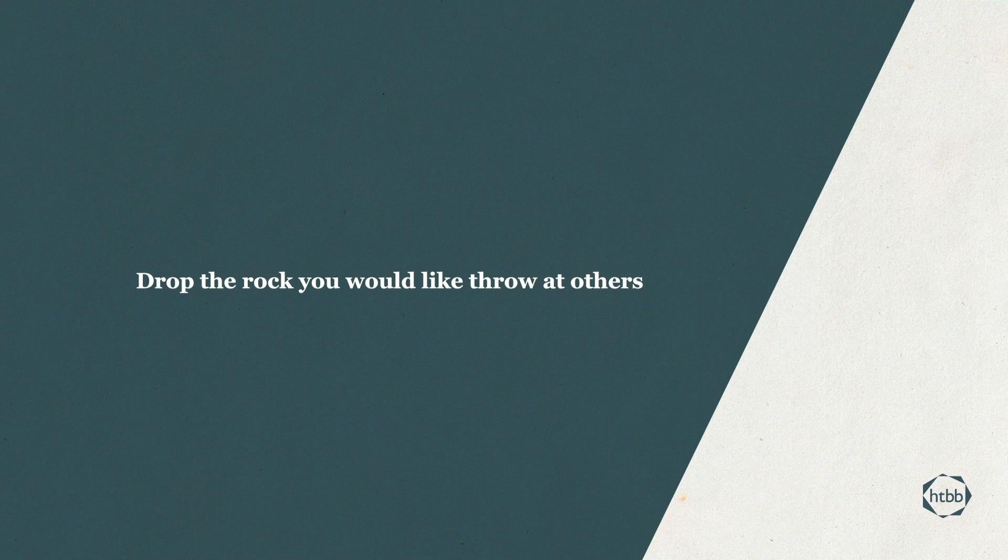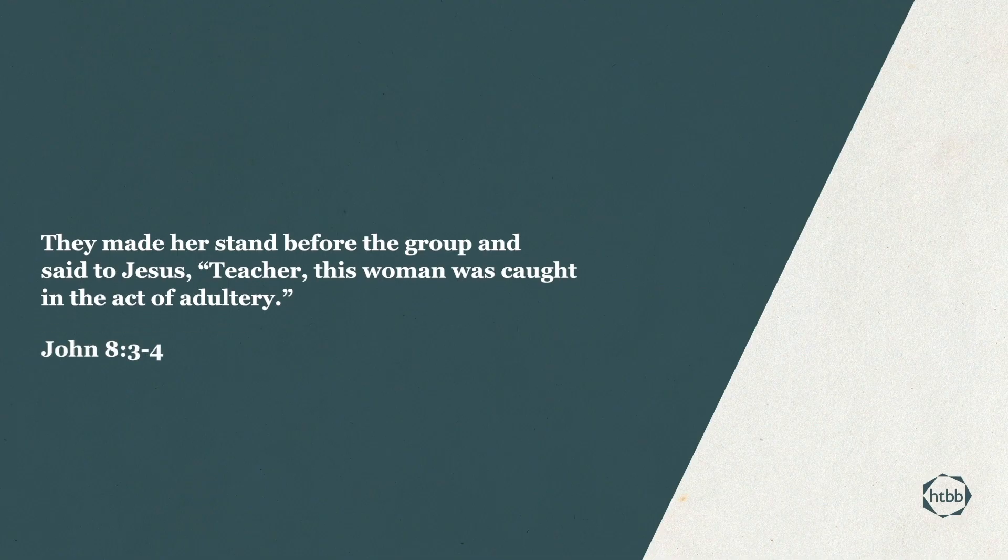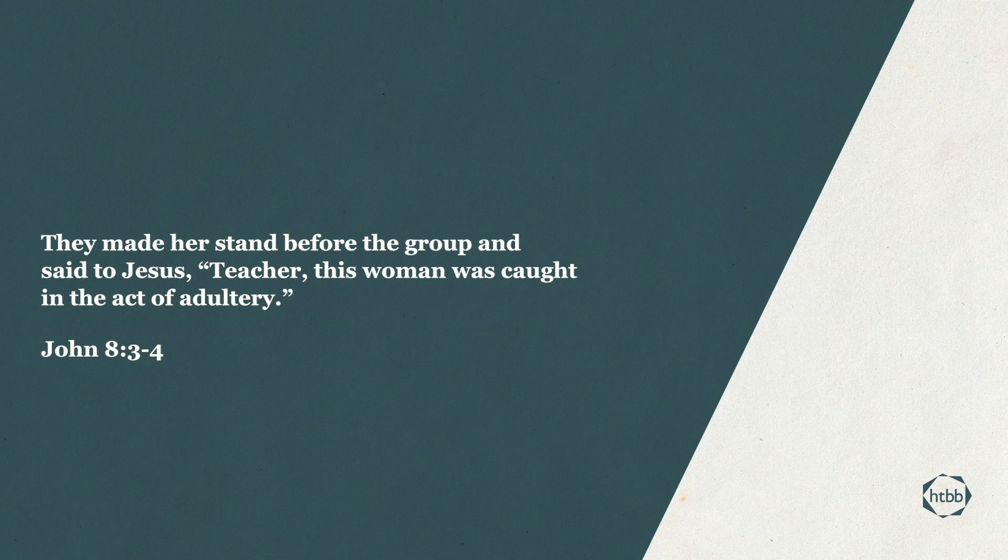Firstly, drop the rock you would like to throw at others. Condemnation is a boomerang. It always ends up going in the opposite direction. When you throw it at others, it always comes right back at you. We read, they made her stand before the group and said to Jesus, teacher, this woman was caught in the act of adultery. And I think, let's be honest, that's a bit weird. They kind of come boasting about the fact that they caught her in the act. I kind of think they probably have more issues than she does. And they bring her before Jesus. They didn't need to do that. They didn't need to bring her and make her stand in front of everyone. But they do. And she is disheveled and she is defenseless. And really, it's kind of a picture of what can go on in our heads when we get angry at someone. I don't know about you, but when you have an argument with somebody in your head and you construct a watertight case against them and they're totally at your mercy and you're going to sling the rock of condemnation at them.